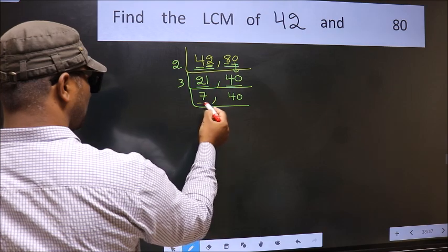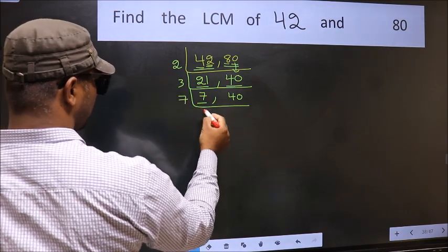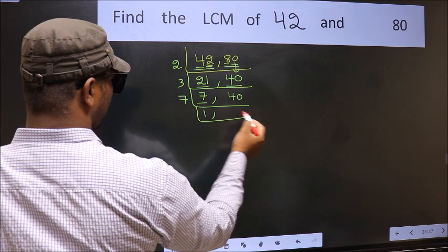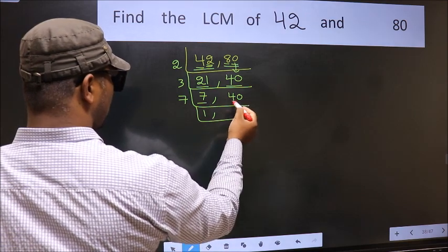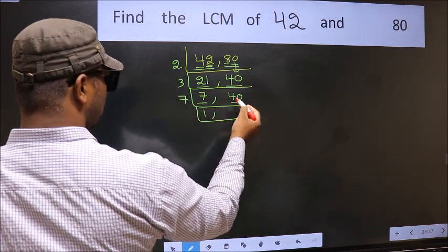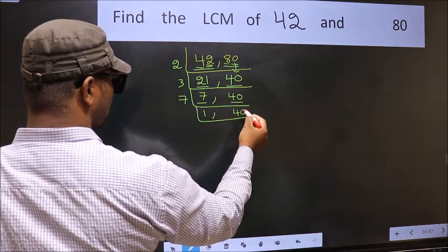Now here we have 7. 7 is a prime number, so 7 wants 7. The other number 40 is not divisible by 7, so we write it down as it is.